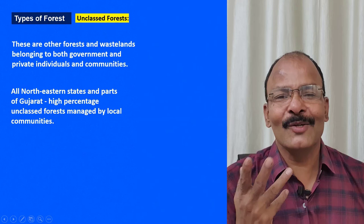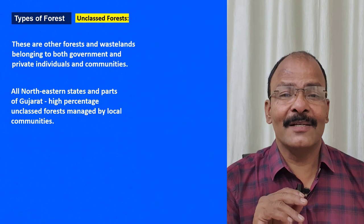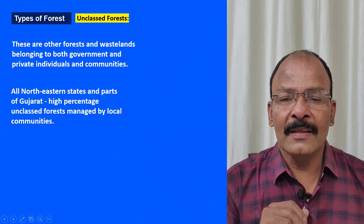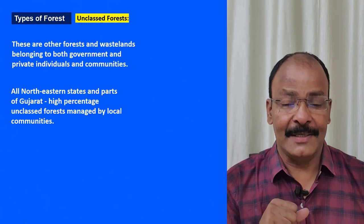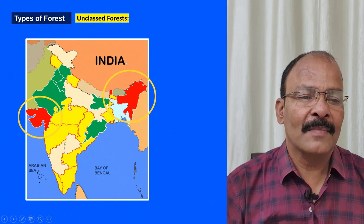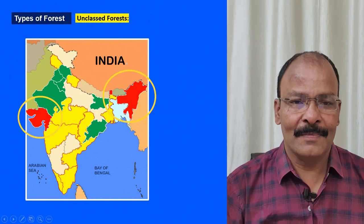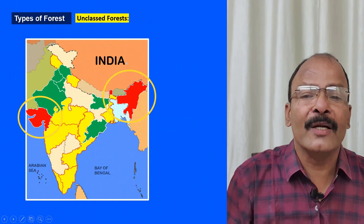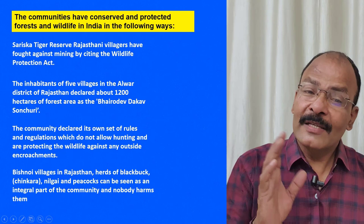The third type is unclassified forest — the government has not yet planned anything for these areas. They can be given to industries for industrialization, for settlements, or anything else. These are other forest and wastelands belonging to both government and private individuals and communities. In India, they are mostly found in Gujarat and the northeastern states.